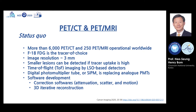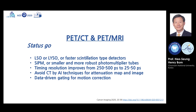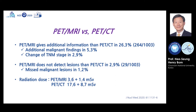Future technical developments of PET-CT and PET-MRI include faster detectors, more robust photomultiplier tubes, higher resolution, and new software. PET-MRI is more recently developed technology than PET-CT. This paper, recently published in the Journal of Nuclear Medicine by a German group, compares PET-MRI and PET-CT. PET-MRI provides additional information over PET-CT in 26.3% of cases, with additional malignant findings in 5% and change of TNM stage in 3%. PET-MRI misses lesions compared to PET-CT in 3% of cases.